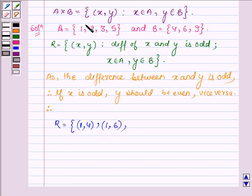So the pairs are (1,4) and (1,6). Now if x is 2, that is if 2 being an even number, you will have to find all the odd numbers from the set B to make the ordered pairs, and that is 9.